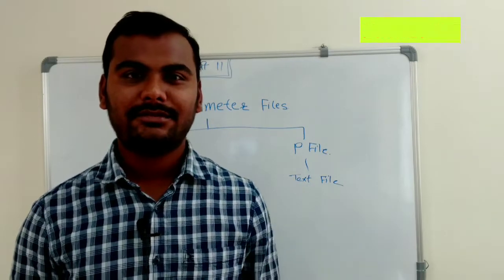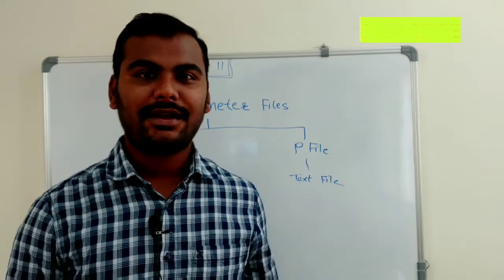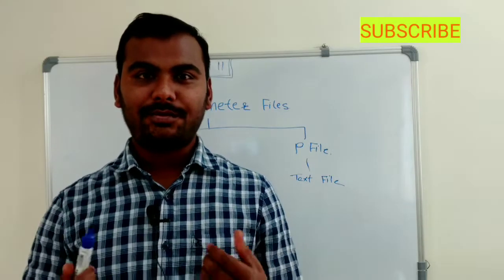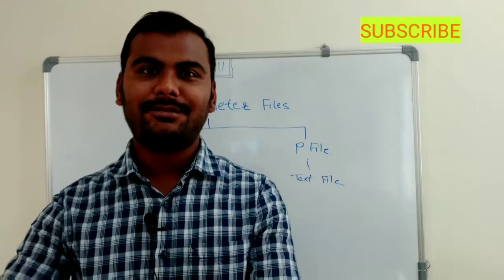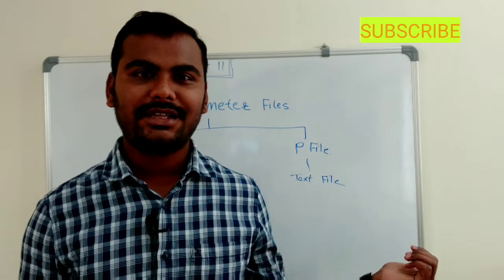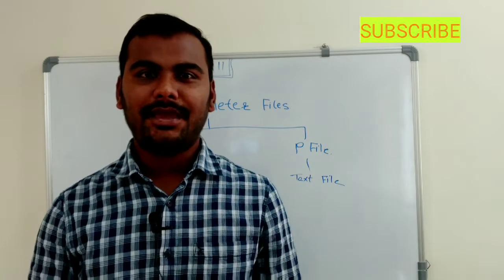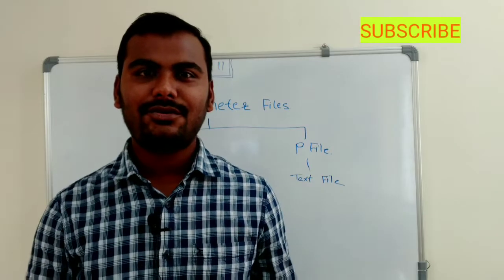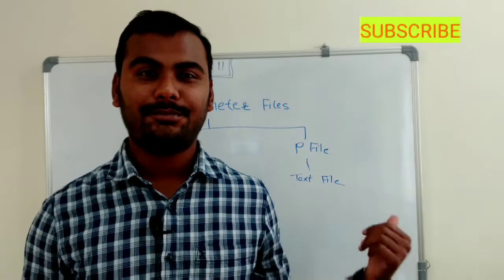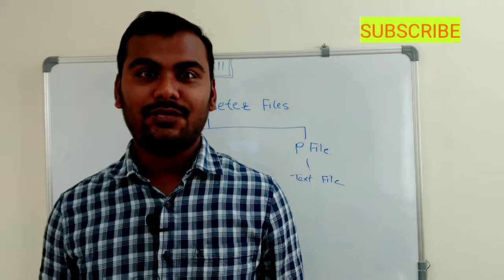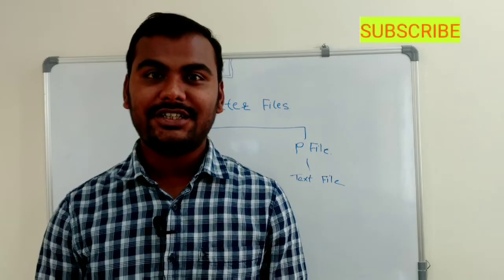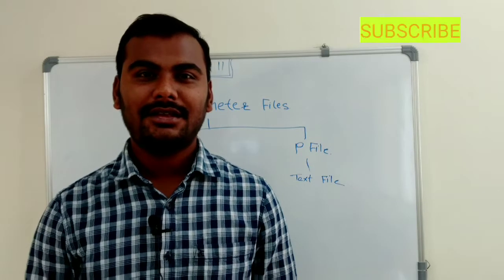Now, why do we have both files? If you want to make changes to the parameter file, you can directly use the PFile because it's a text file — just open it with the VI editor, make the appropriate changes, close the file, and start your database with the PFile. For the SPfile, which is in binary format, you need to use the ALTER operation to make changes.